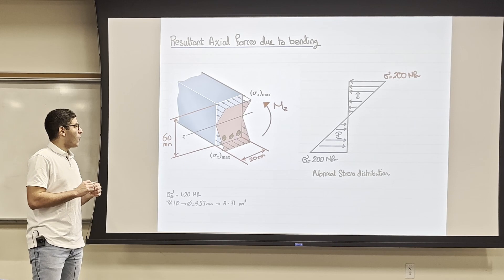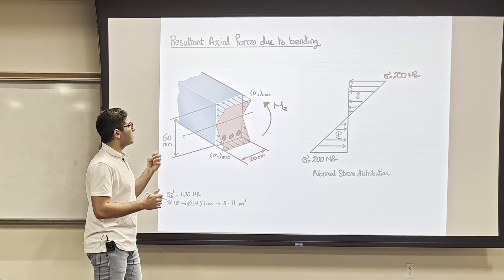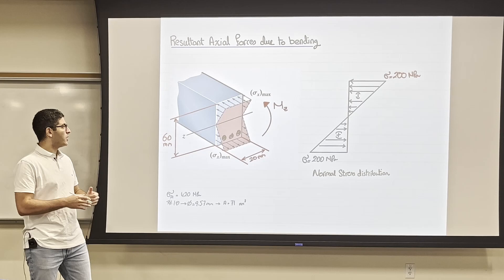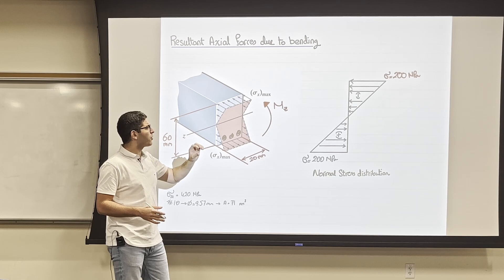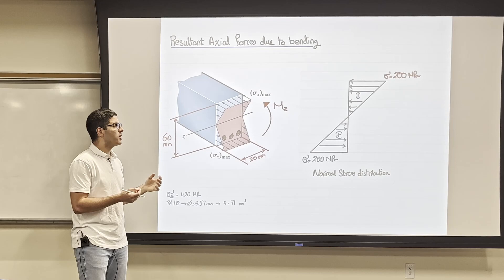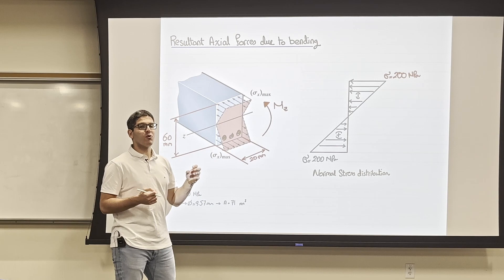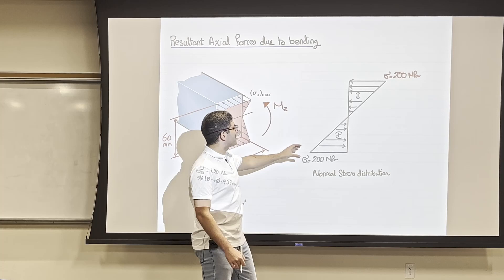When we explained the normal stress lecture and bending stress lecture, we went through normal stress distribution. We need the normal stress distribution to understand which part of the beam has compression and tension due to bending. Imagine a reinforced concrete beam — we put steel at the bottom where there is tension, because concrete is weak in tension but strong in compression.